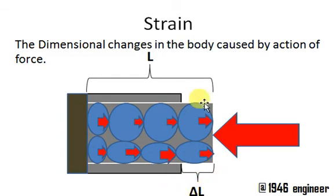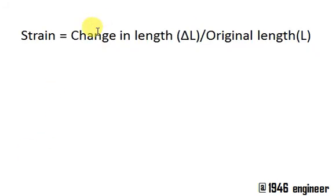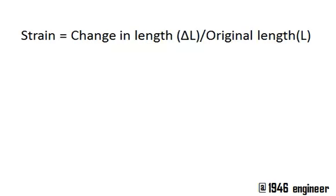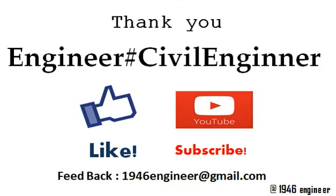It has no units. So strain can be defined as the ratio of change in length to the original length. All this happens because of the action of the external force, and that is called strain. If you understand the basic concept of stress and strain with my explanation,